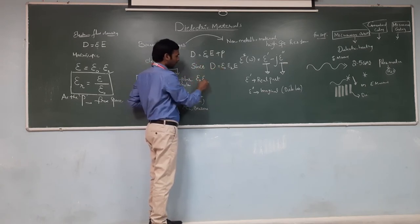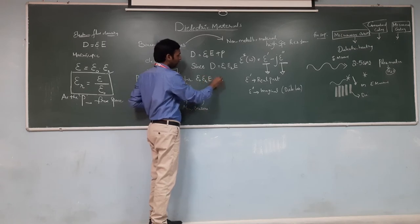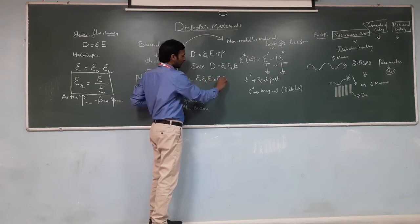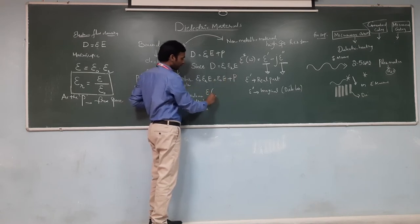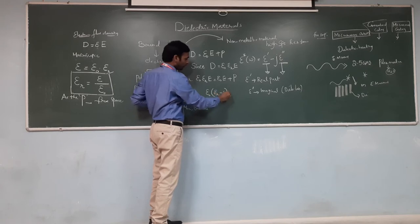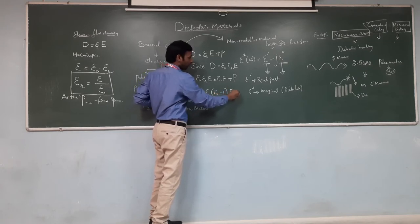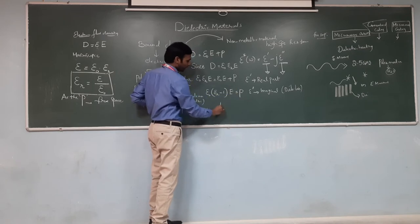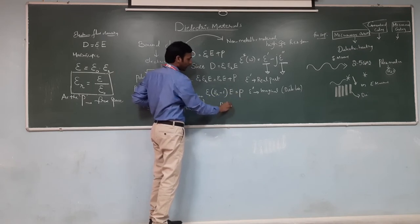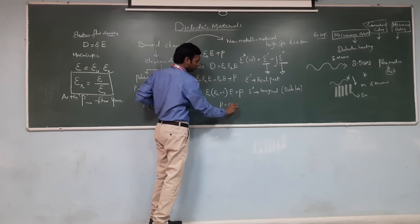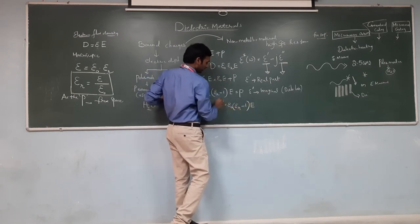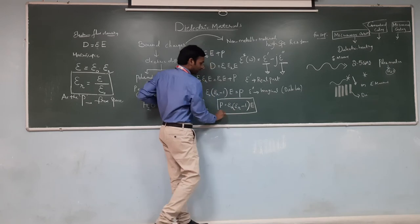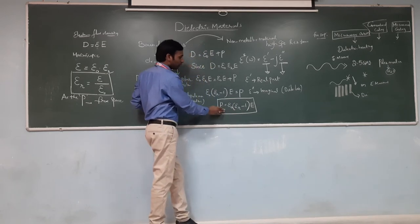Taking ε₀ common: ε₀(εᵣ − 1)E = P. Therefore, P = ε₀(εᵣ − 1)E. This equation represents the dielectric material due to the polarization process.